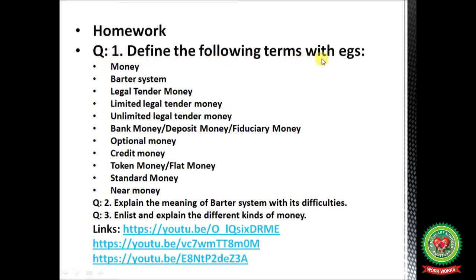Homework: Question 1 — Define the following terms with examples: money, barter system, legal tender money, limited legal tender money, unlimited legal tender money, bank money or deposit money or fiduciary money, optional money, credit money, token money or flat money, standard money, near money. Question 2 — Explain the meaning of barter system with its difficulties. Question 3 — Enlist and explain the different kinds of money. Please go through the links on YouTube for more clarity, and complete your homework in your copies for better learning. Thank you for listening.